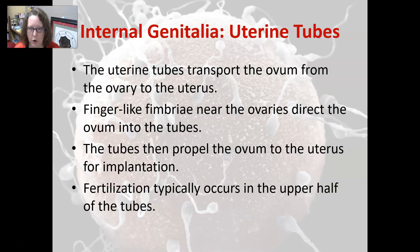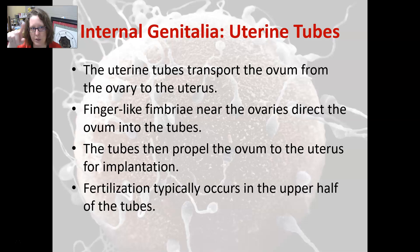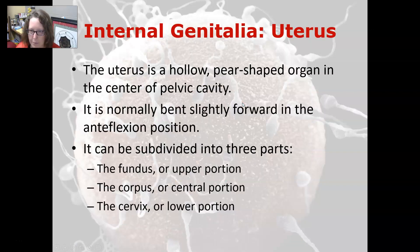The uterine tubes transport the ovum from the ovary to the uterus. There are finger-like fimbriae near the ovaries that direct the ovum into the tubes — they move around and beat to coax the ovum in. The tubes then propel the ovum to the uterus for implantation. Fertilization typically occurs in the upper half of the tube. If sperm is present there, fertilization happens, and the fertilized egg travels down the fallopian tube to implant in the uterus.